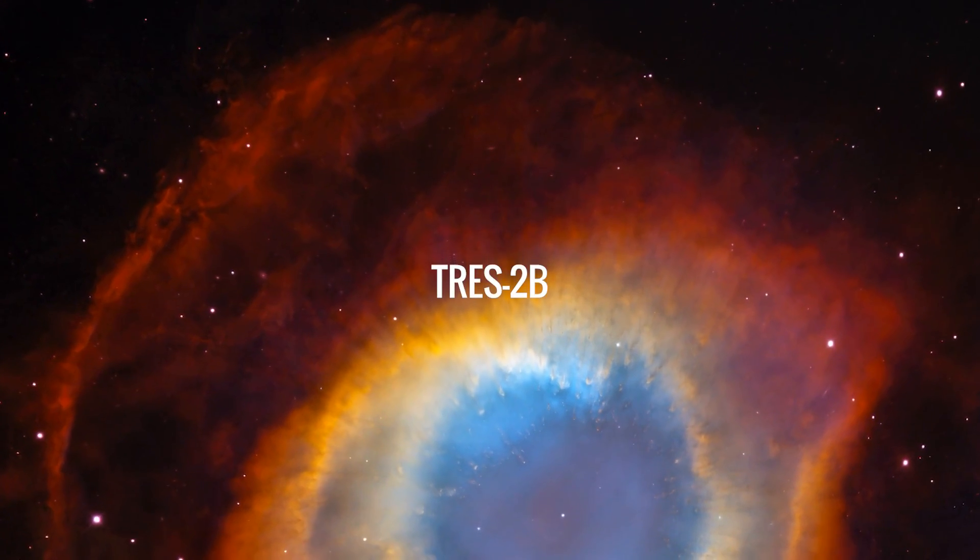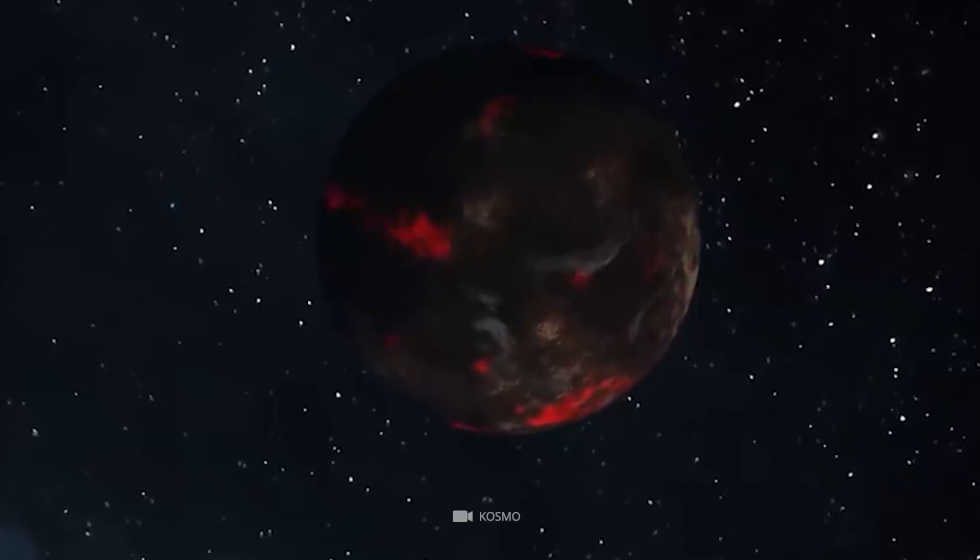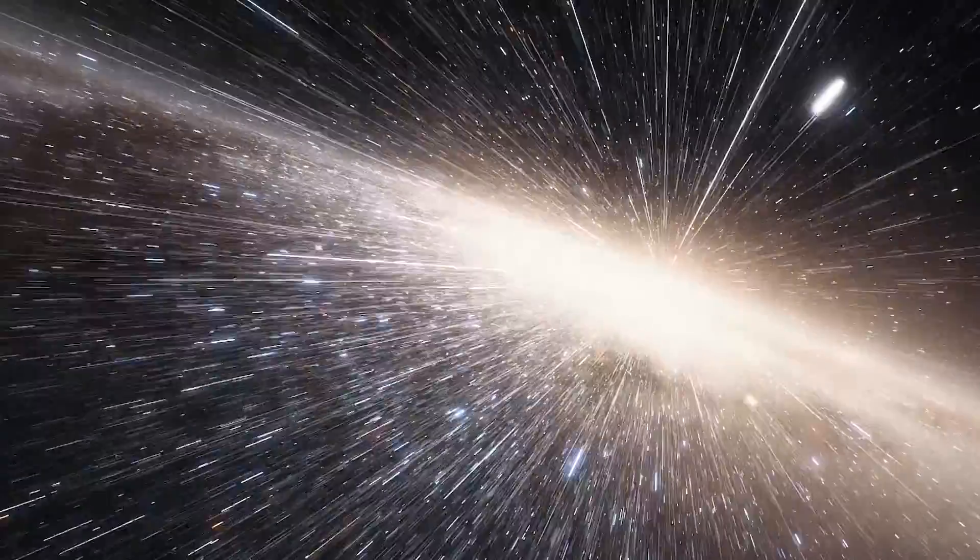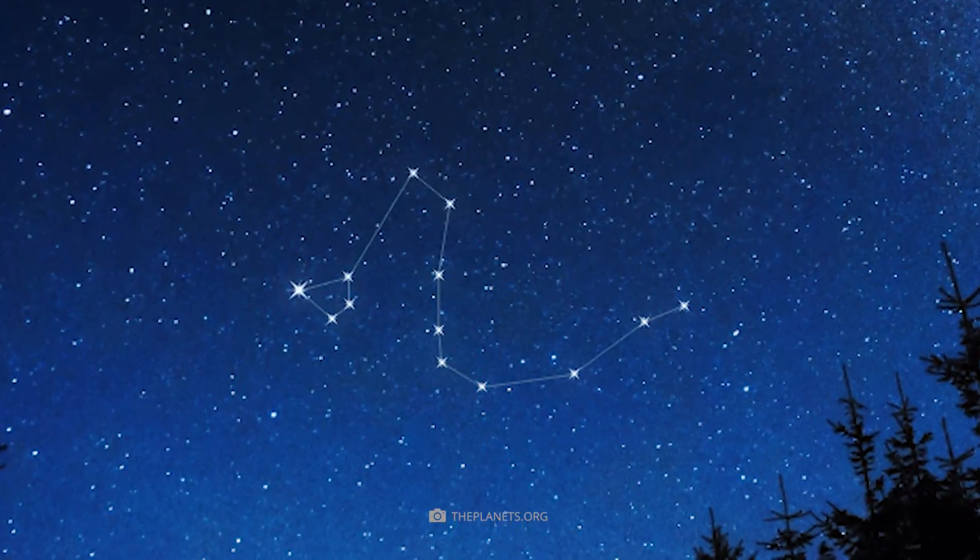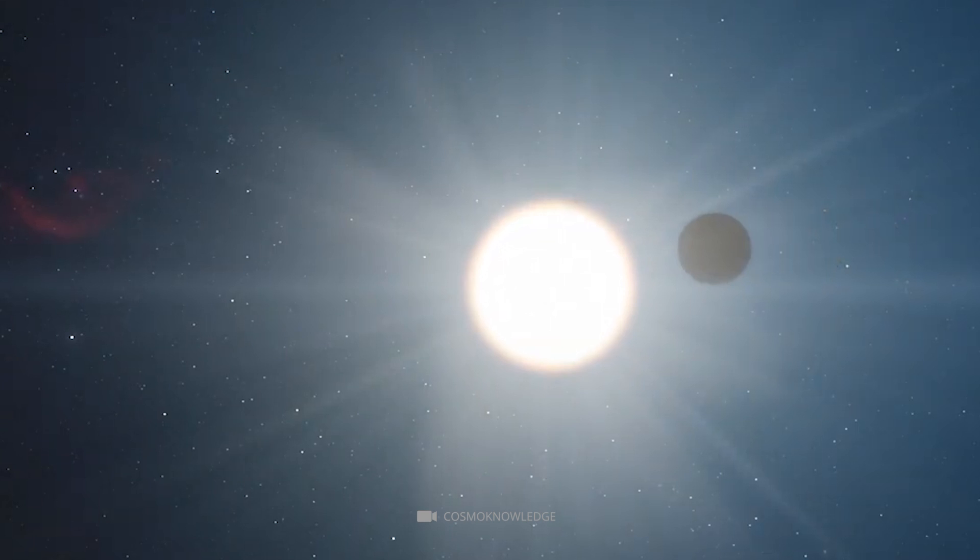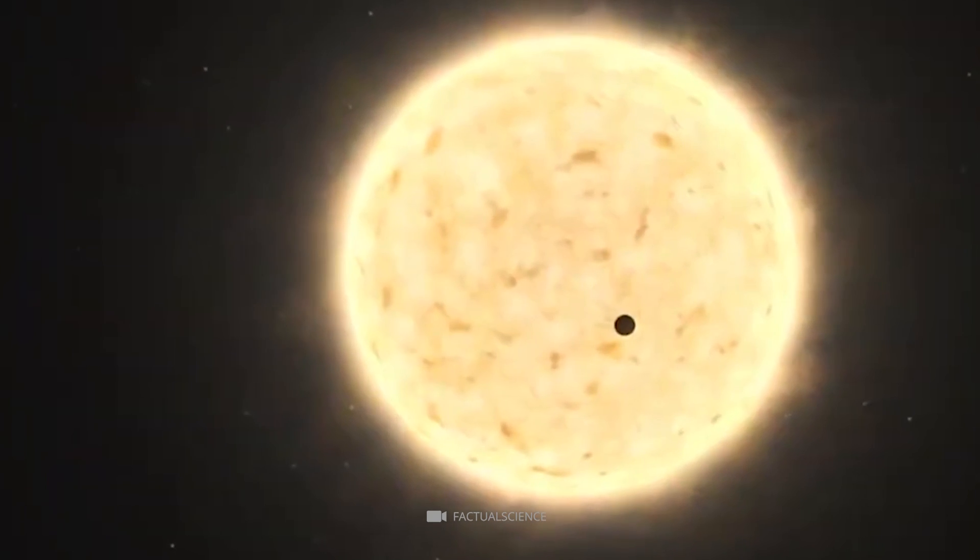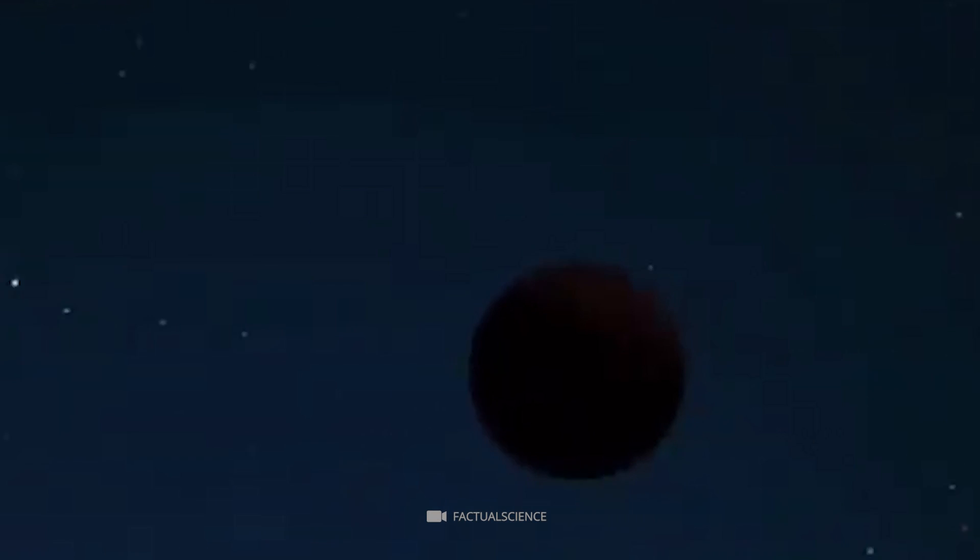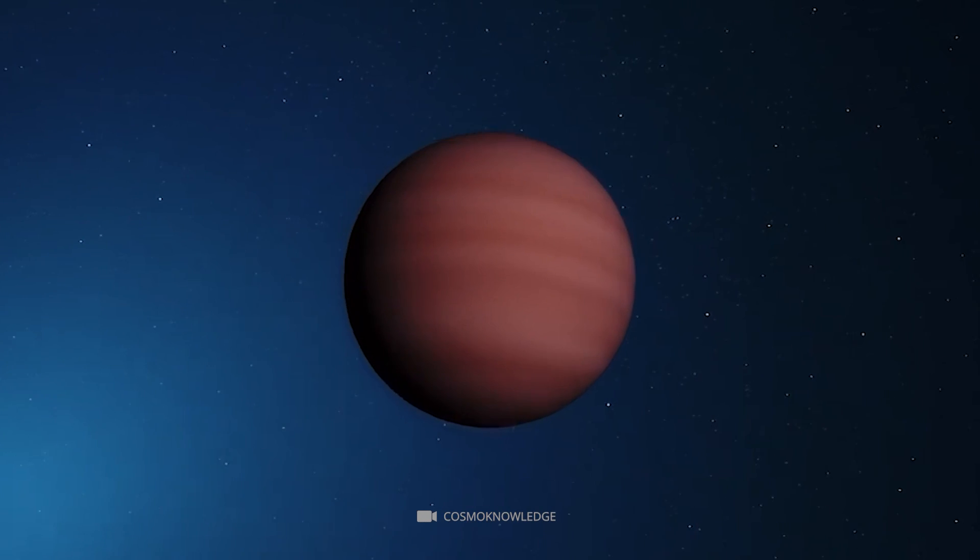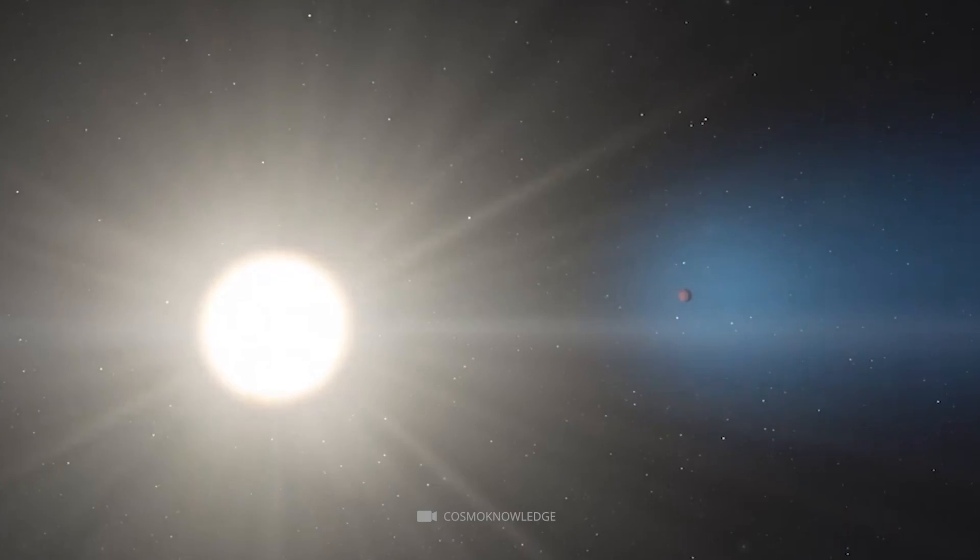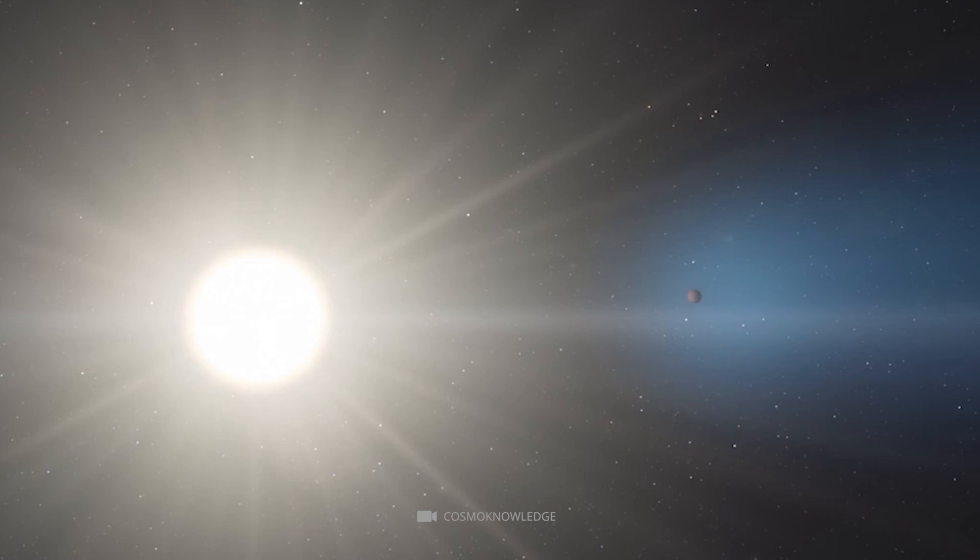TRES-2b is one of the largest known exoplanets, located 750.2 light-years away from Earth in the constellation Draco. It was discovered in 2006 by astronomer Francis T. O'Donovan and is a gas giant that orbits the star GSC 03549-02811. TRES-2b has an impressive radius of 90,938 kilometers and an orbital period of 59 hours, meaning it circles its host star every two and a half days.